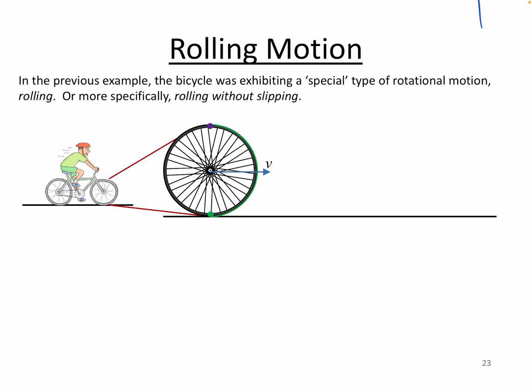The type of motion we were exhibiting there, the assumption we were making, is that when I hit the brakes to avoid running into the back of that truck, I did not skid. I continued to roll, and specifically I continued to roll without slipping.